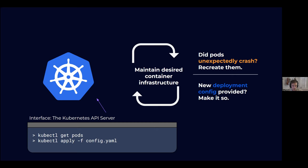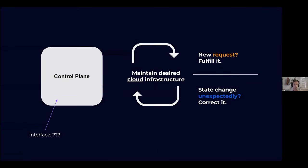As we think about the developer platform we're trying to build — helping teams move faster by consuming cloud resources — we need something else. We need a control plane whose job is to maintain the desired cloud infrastructure. It's up-leveling beyond just containers to the entire cloud or any SaaS service. You submit a request to your control plane and it fulfills it. If state drifts from the desired state you've declared, it will correct it.